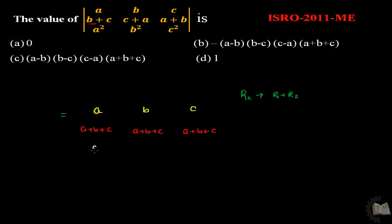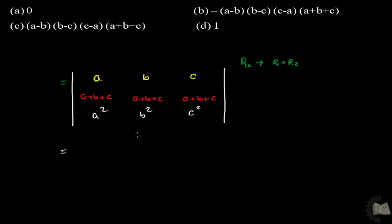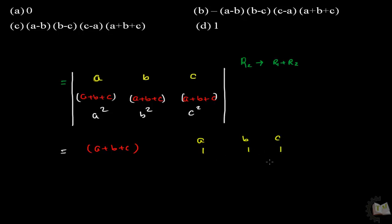Write down the same third row: a², b², c². After the transformation, the second row becomes a+b+c, a+b+c, a+b+c. Now apply the property of determinants — since these three terms in the second row are the same, take (a+b+c) as a common factor outside the matrix, leaving 1, 1, 1 in that row.